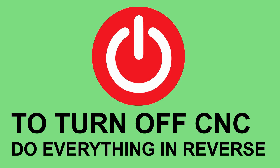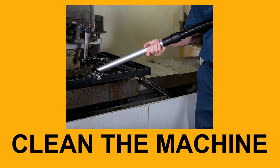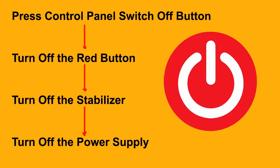To turn off the CNC machine, everything has to be done in reverse. First, clean the CNC machine well, then turn off the control panel. Go to the backside and turn off the red knob button, then turn off the stabilizer, and finally turn off the main power supply.